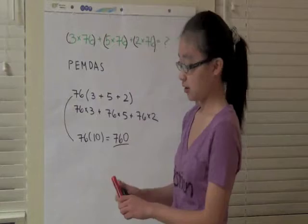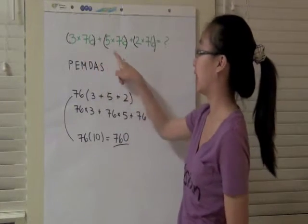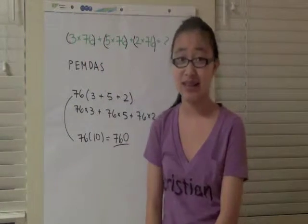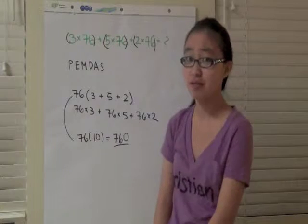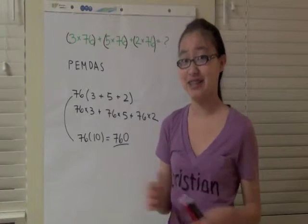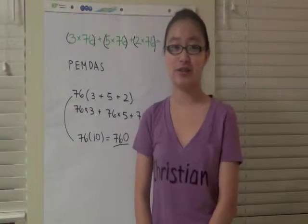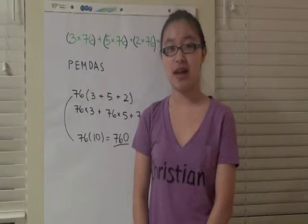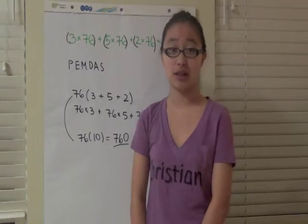And then you have your answer rather than having had to multiply three times 76, five times 76, and two times 76, which I can't even do. So that's a little trick called factoring, and you can use it to help make computation a little bit easier.